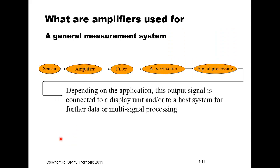In terms of a general measurement system made out of a sensor, amplifier, filter, and A-to-D converter — with digital signal processing at the back end connected to maybe an industrial control system, display unit, or whatever — in this kind of context, amplifiers and analog amplifiers are mostly used for amplifying the level of the signal that comes from the sensor.